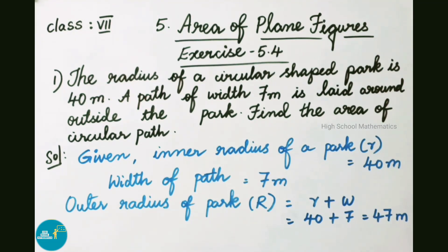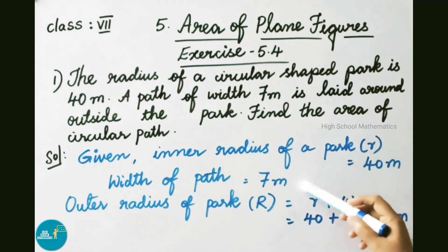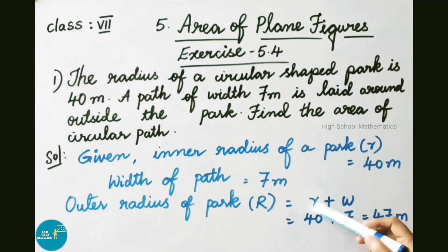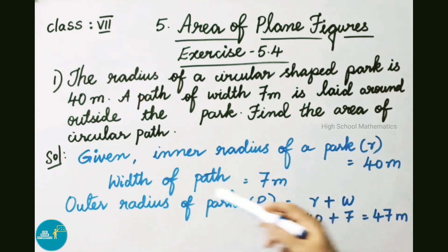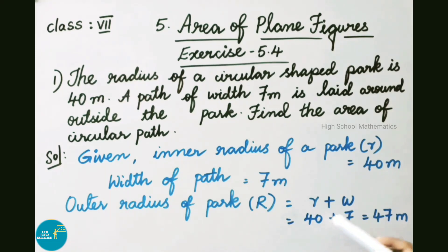Now we have to find the outer radius of the park, that is capital R. The formula is: outer radius = inner radius + width of path, that is small r + w = 40 meters + 7 meters = 47 meters. Therefore, outer radius of park is 47 meters.